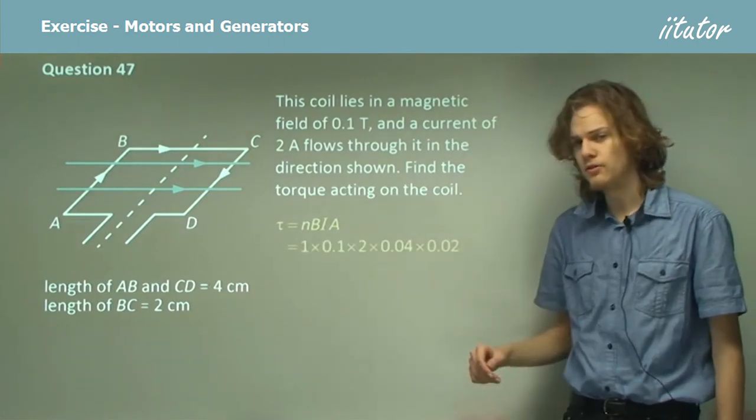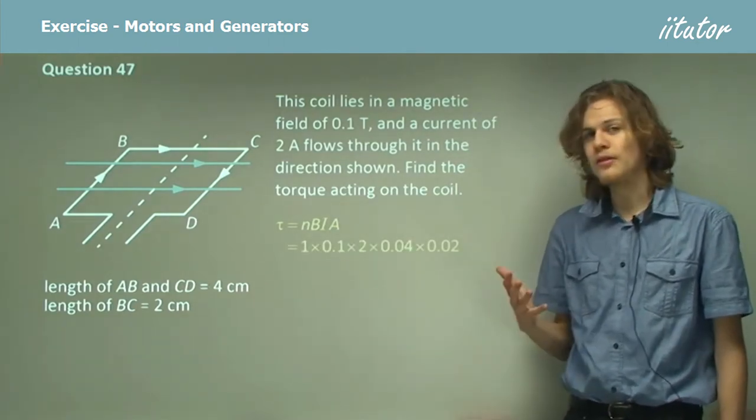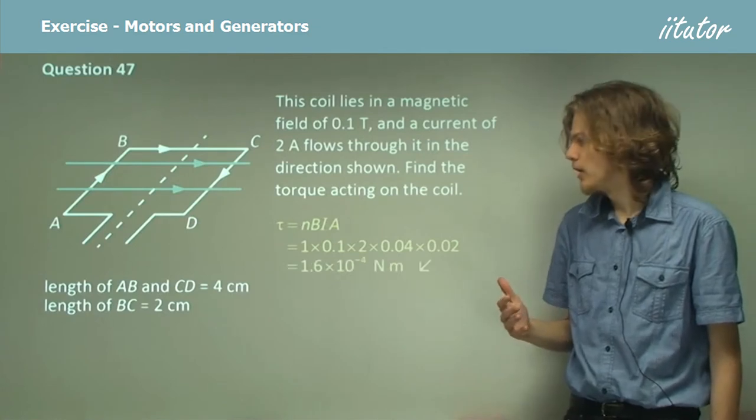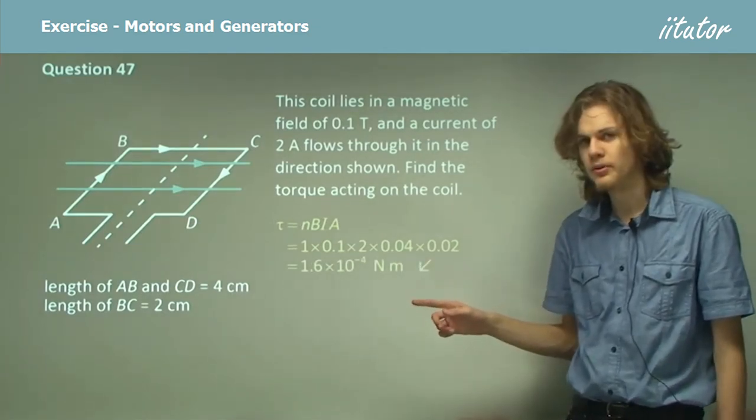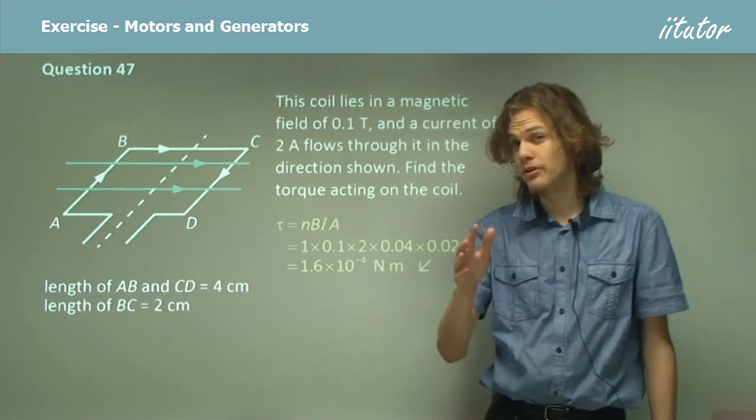So we can substitute in these values and evaluating that with the calculator, we'll end up with 1.6 times 10 to the minus 4 Nm. Don't forget the units of torque are pretty unusual.